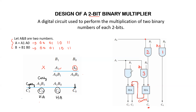For A1 B1, another AND gate is required. A1 already has a connection, so we use a node and take the connection for A1 B1. The output of this AND gate and the carry from the first half adder are connected to the second half adder, since we again have two bits to add. From this second half adder we get C2 as the sum and the final carry as C3. In this way we develop the circuit diagram for the 2-bit binary multiplier.